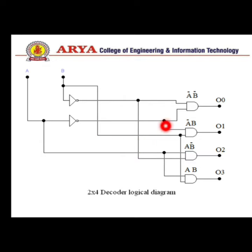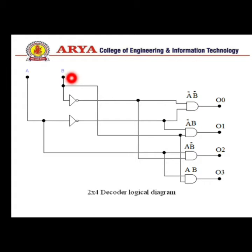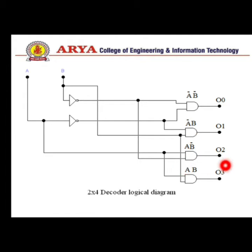The minterm for D0 is A-bar and B-bar, so A and B are both connected to NOT gates and then to an AND gate. Similarly, D1 is A-bar·B, D2 is A·B-bar, and D3 is A·B. This is the basic circuit diagram for the 2-to-4 decoder.